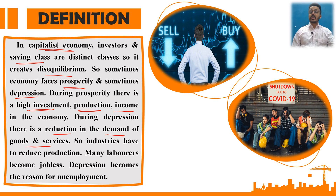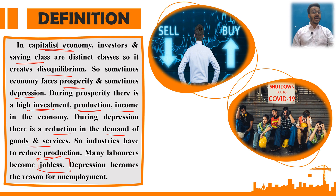When we talk about depression — when there is a slowdown — there is no demand for goods and services in the market. When there is no demand, industries have to reduce production. Many laborers become jobless. We saw this in the COVID-19 situation where many people lost their jobs because there was no work, or there was no demand in the market, so production was cut and workers were no longer needed. So depression becomes the reason for unemployment.